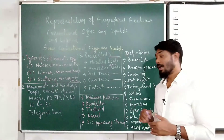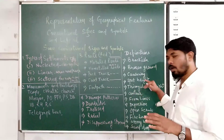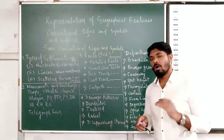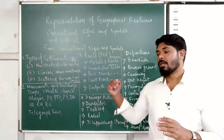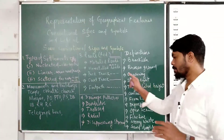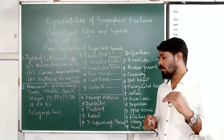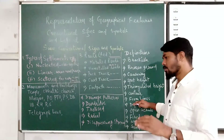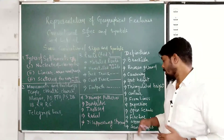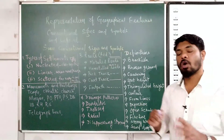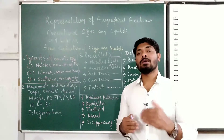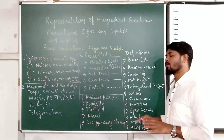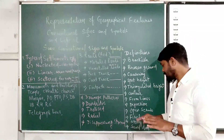Triangulated height means the height of a place above mean sea level as surveyed by the triangulation method. It is shown on the topographical map with a small triangle followed by a number. Contour lines are brown lines showing the height of a mountain or hill. Form lines are dashed contour lines used in remote areas where surveyors cannot access. Depression means a hollow on the ground created by wind on sand.